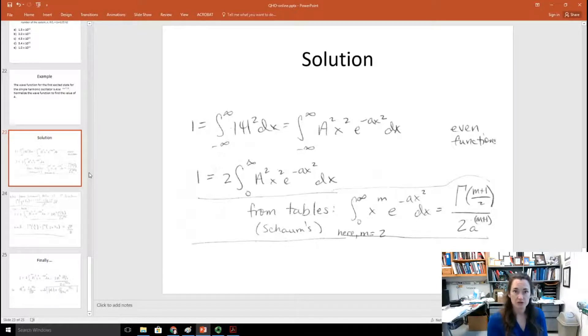So, now we have 1 is equal to 2 times the integral from 0 to infinity of a squared x squared e to the minus little ax squared dx. Now, I can look this up in any integral table that you like. I like Shams because it's not very expensive. It's less than 20 bucks, it's paperback, so it's light. So that's good for me.